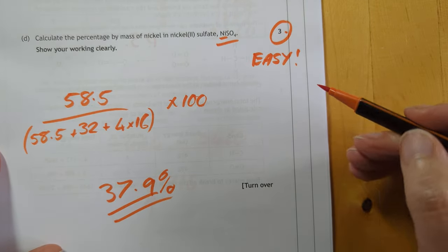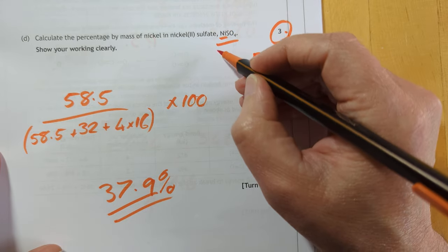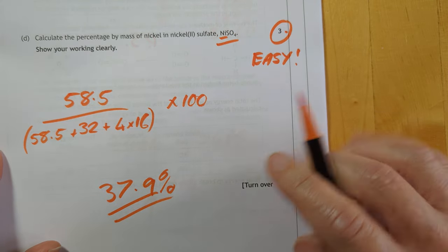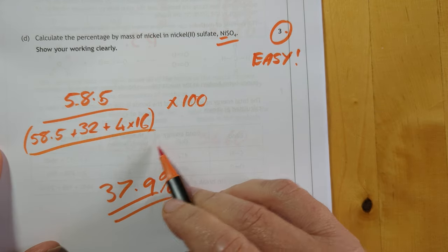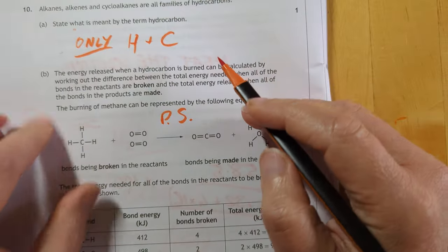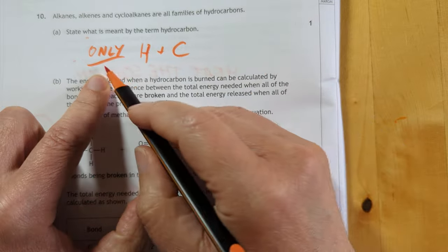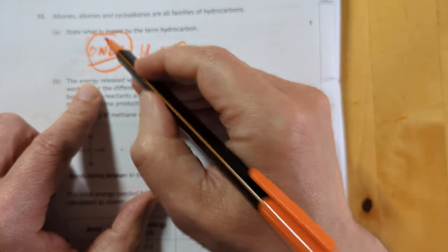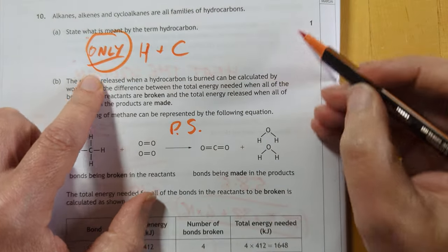This was an easy three marks. Blimey. I would have picked one that was more complex, but whatever. It's 58.5 divided by the GFM times 100, 37.9%. A hydrocarbon contains only hydrogen and carbon. I think you'll need that. They're getting a wee bit pedantic these days about that.